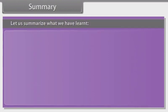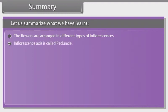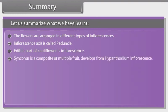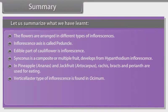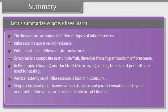In summary: flowers are arranged in different types of inflorescences; the inflorescence axis is called peduncle; the edible part of cauliflower is inflorescence. Syconus is a composite or multiple fruit developing from hypanthodium inflorescence. In pineapple (Ananas) and jackfruit (Artocarpus), bracts and perianth are used for eating. Verticillaster type of inflorescence is found in Ocimum. Simple cluster of radical leaves with exstipulate and parallel venation with cymose or umbel inflorescence are characteristics of Liliaceae. In family Gramineae, the inflorescence is a spikelet.